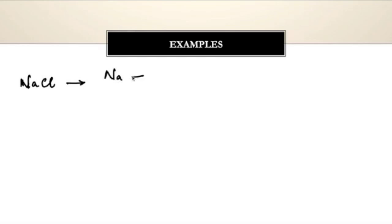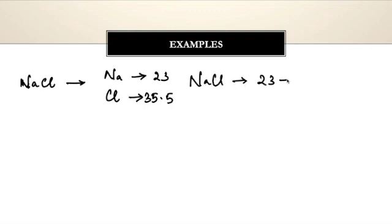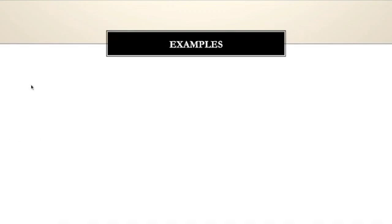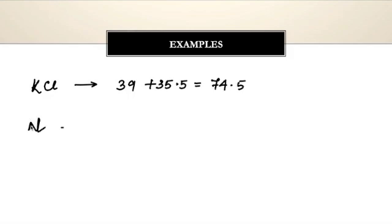For sodium chloride (NaCl): sodium has atomic mass 23 and chlorine has atomic mass 35.5, so the formula mass of NaCl is 23 + 35.5 = 58.5. Similarly for KCl: potassium has atomic mass 39 and chlorine 35.5, so the formula mass of KCl is 39 + 35.5 = 74.5.